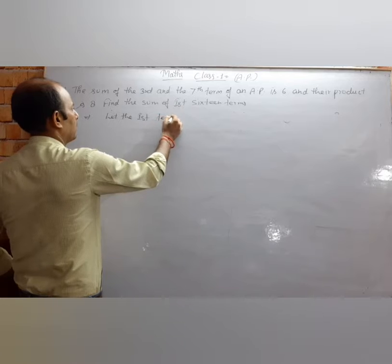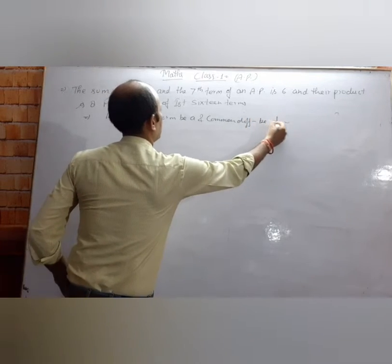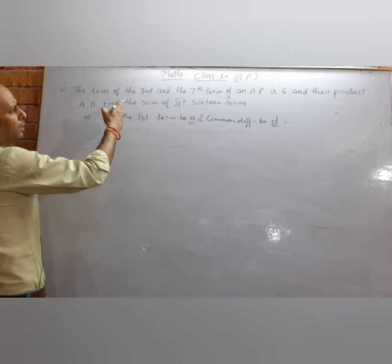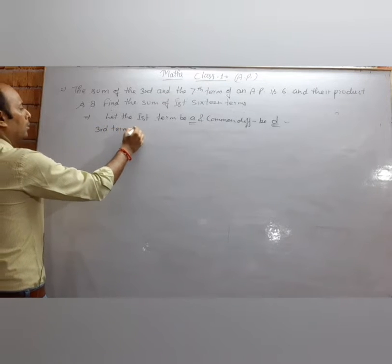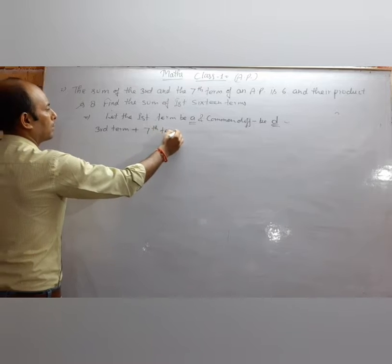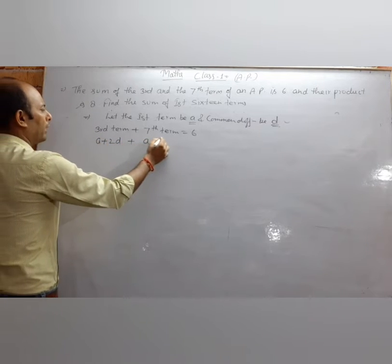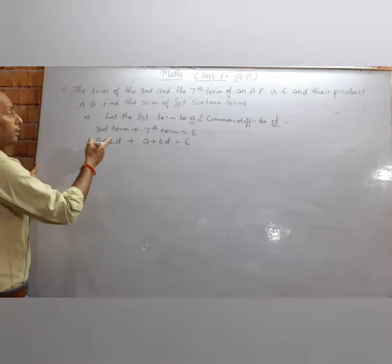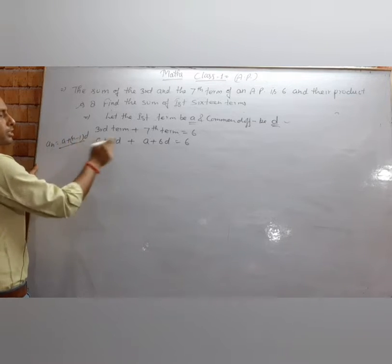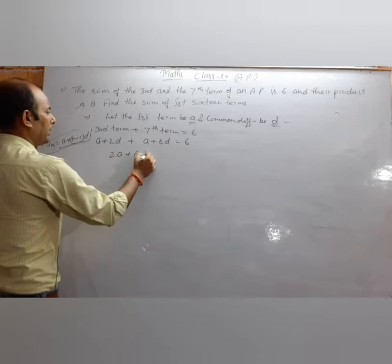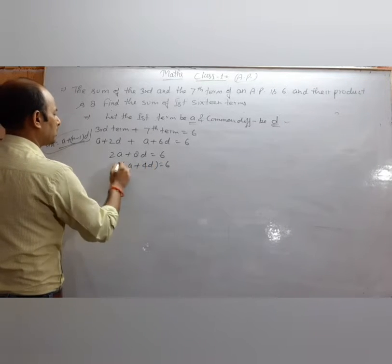Let the first term be a and common difference be d. The sum of the 3rd term and 7th term is given as: 3rd term plus 7th term equals 6. That is, a plus 2d plus a plus 6d equals 6, giving 2a plus 8d equals 6. Taking 2 common: a plus 4d equals 3.